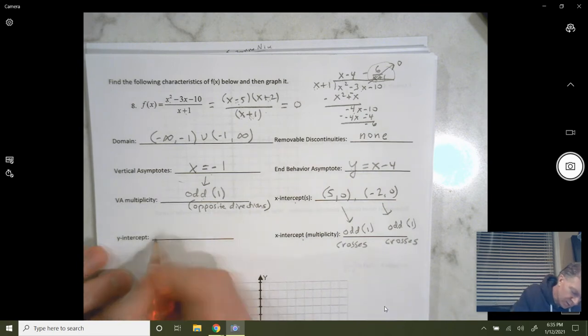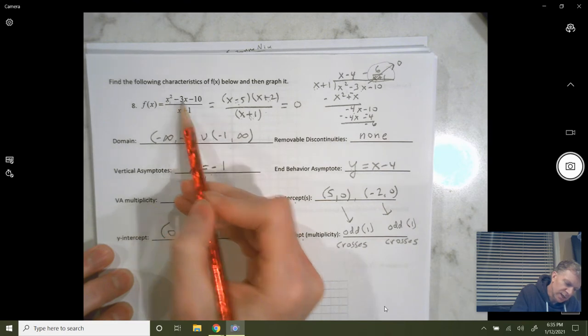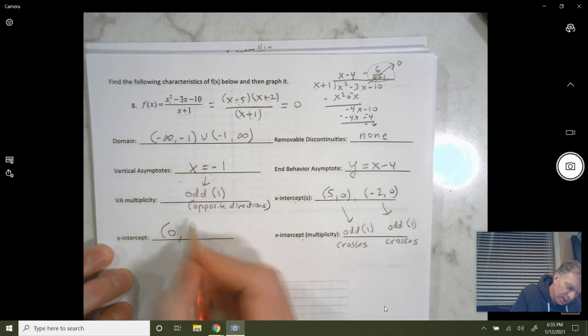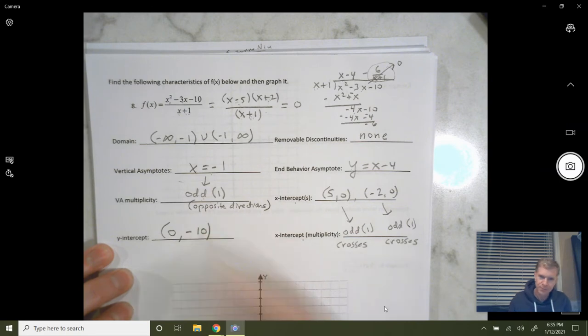So, crosses. And that crosses through as opposed to bouncing off of the x-axis, if it were an even multiplicity. Y intercept. That happens when x is 0. Plug in 0 for x. You get negative 10 on the top and 0 plus 1. So, you get negative 10 over 1.